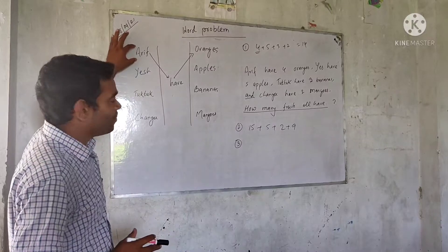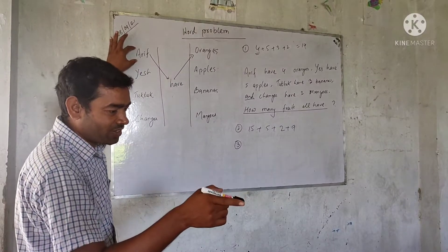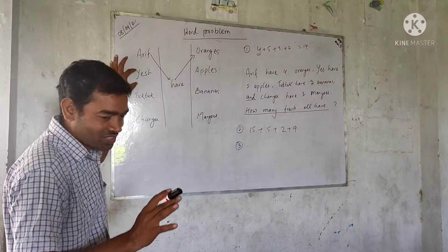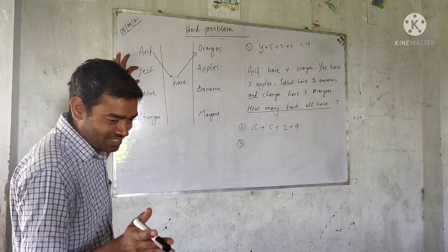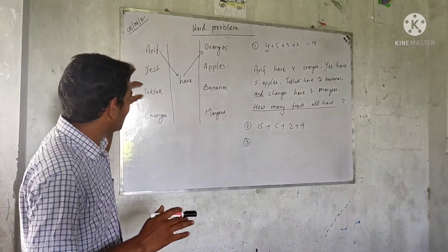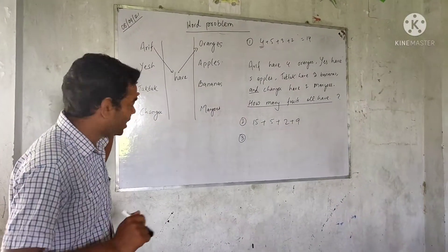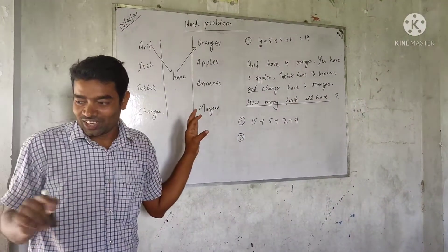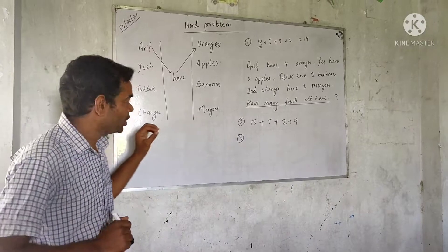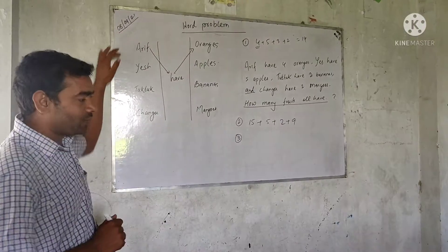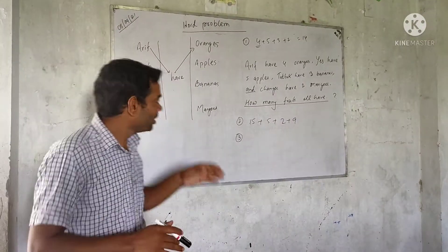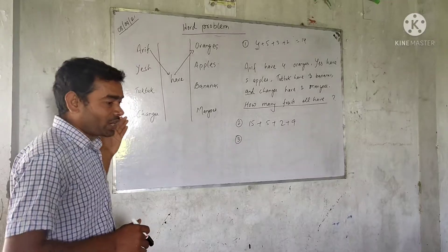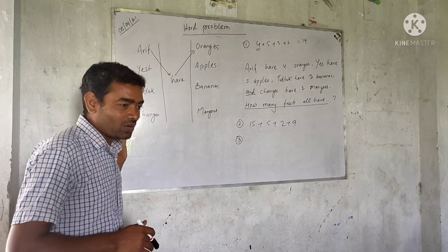For example, Arik — is Arik your friend? Yes. Tuk Tuk, it's your name. And Changu, it's your name. So there are four friends: Arik, Tuk Tuk, and Changu.